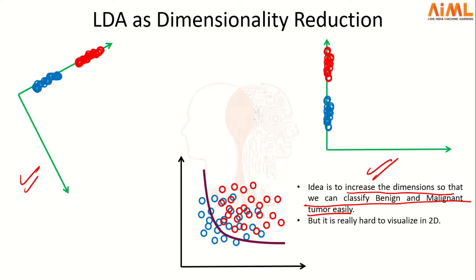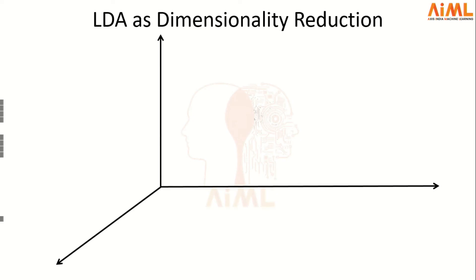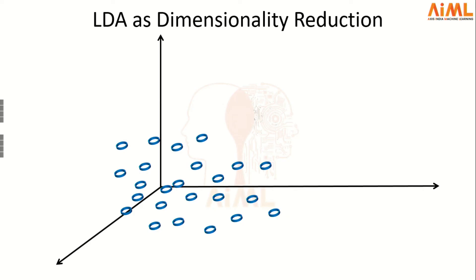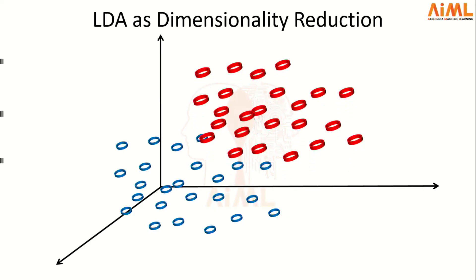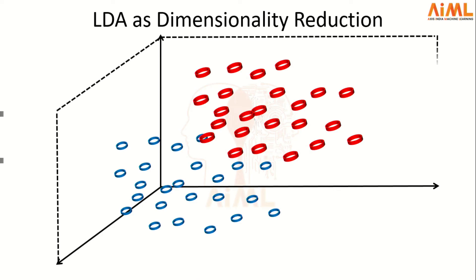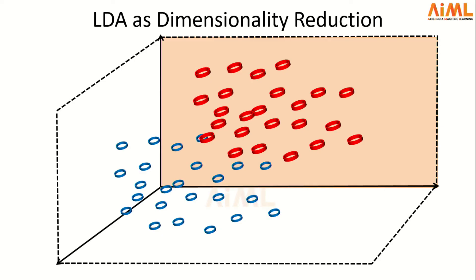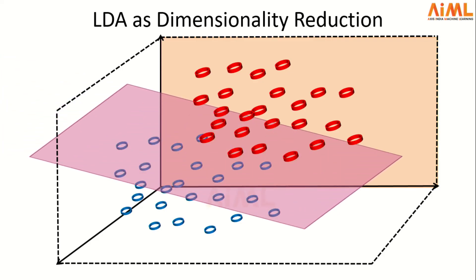It's hard to visualize in 2D, so we jump to 3D because QDA increases the dimensions. These are our benign data points and these are our malignant data points. In 3D space, the decision boundary that looked like a convex curve in 2D is actually a quadratic decision boundary that looks like a plane in 3D. That plane can easily penetrate through the data points to separate them — that's the whole idea behind QDA.